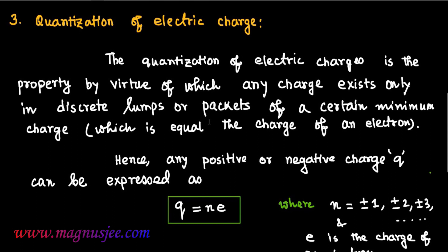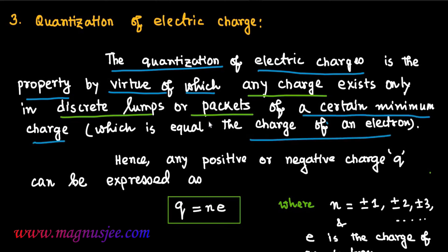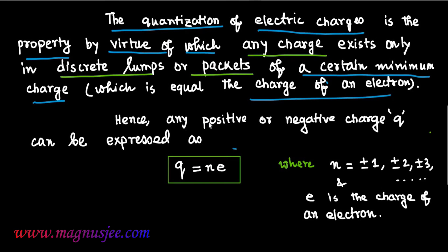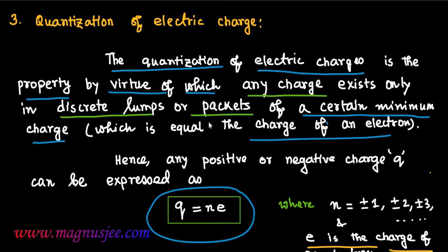So we get the expression Q equal Ne. The quantization of electric charge is the property by virtue of which any charge exists only in discrete lumps or packets of a certain minimum charge equal to the charge of an electron. That means the charge cannot exist in a continuous form — it exists in discrete lumps or packets.